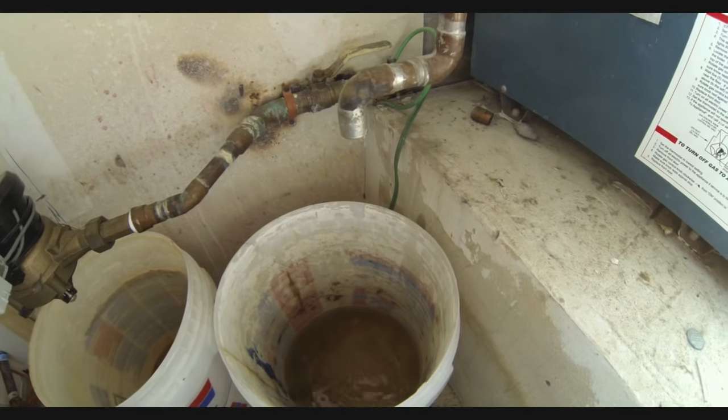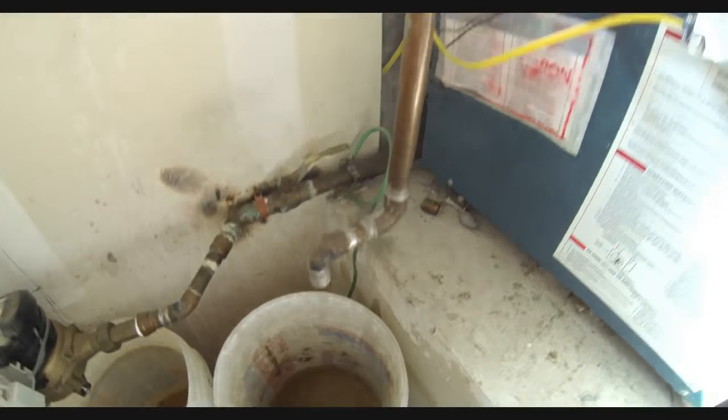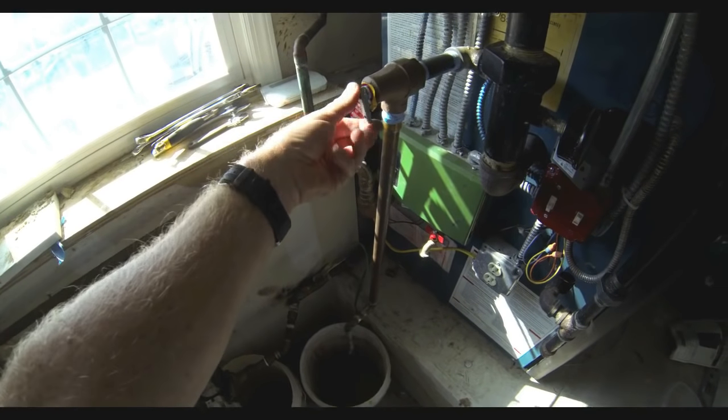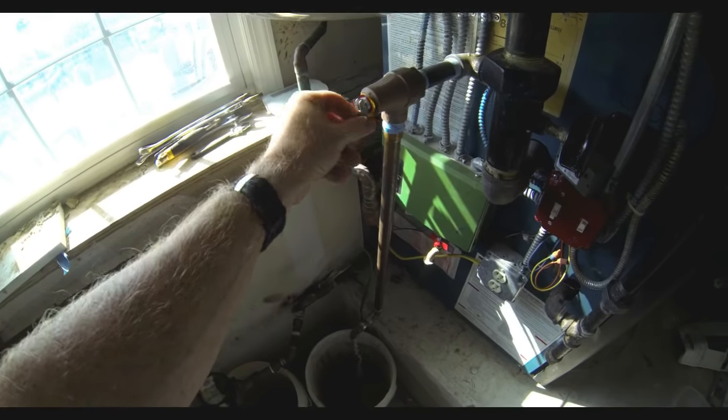So first off, if your boiler is leaking and dripping consistently, first just try to play with that overpressure relief valve a little bit. There's a little tab on the end of it. Sometimes just resetting that valve can stop the leak.